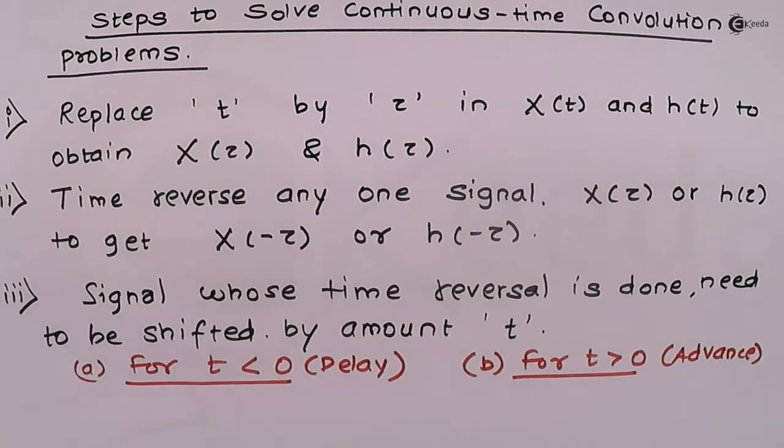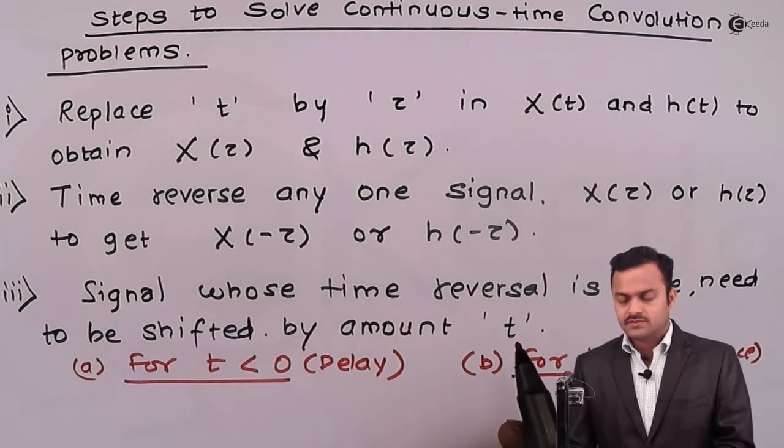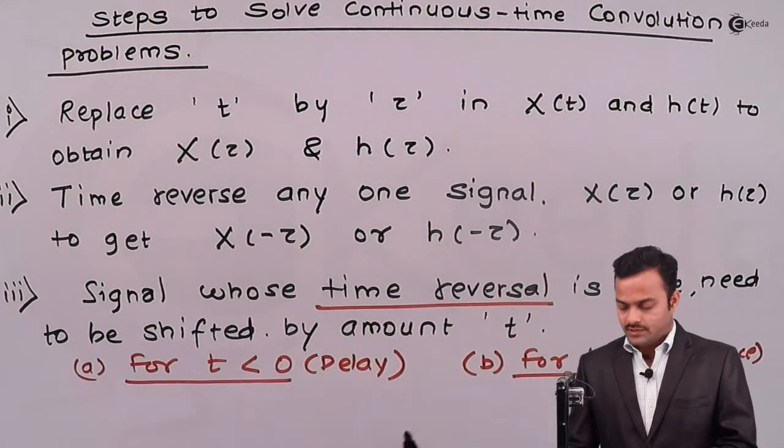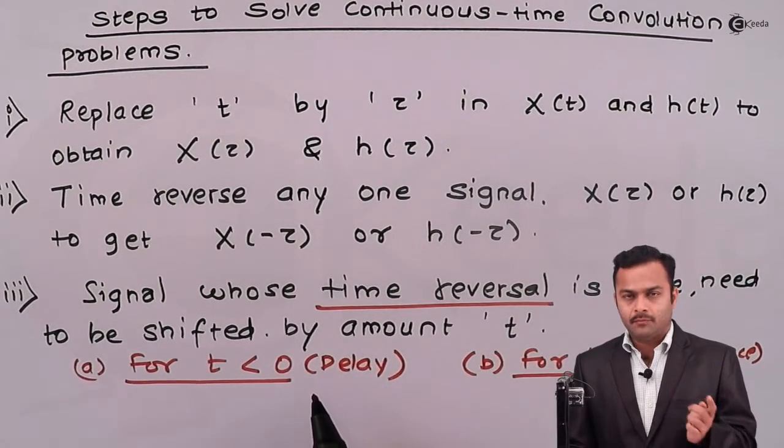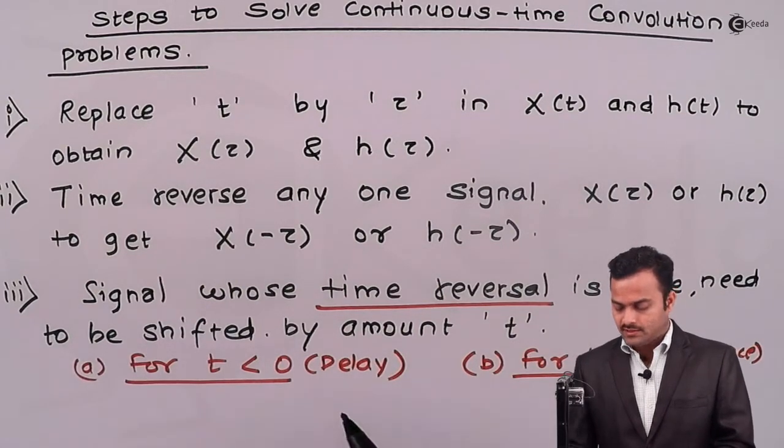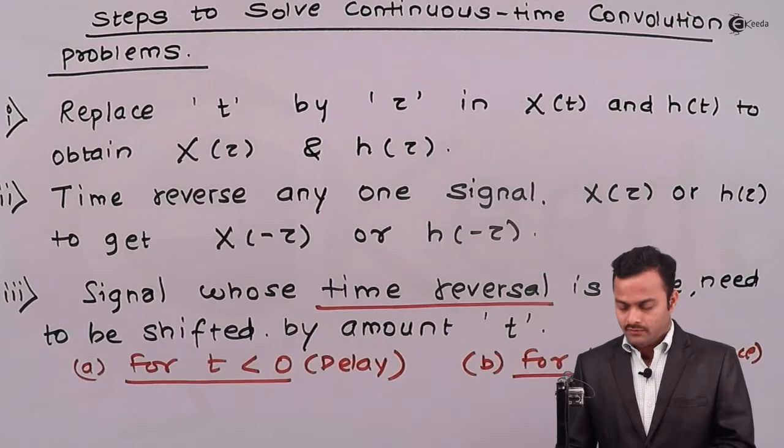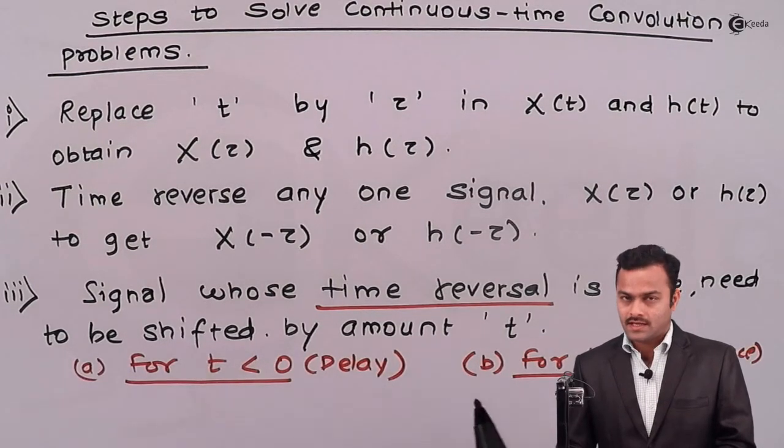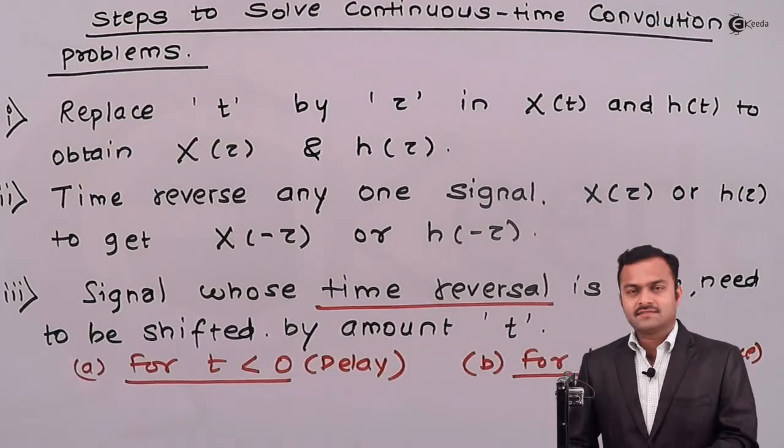So, what we will get? We will get the sequence which is time reversed. It will have the effect of t, either a minus t or a plus t, that depends upon whether you are delaying or advancing. But, whenever we are shifting, we have to consider both delay as well as advance. And in the last step,